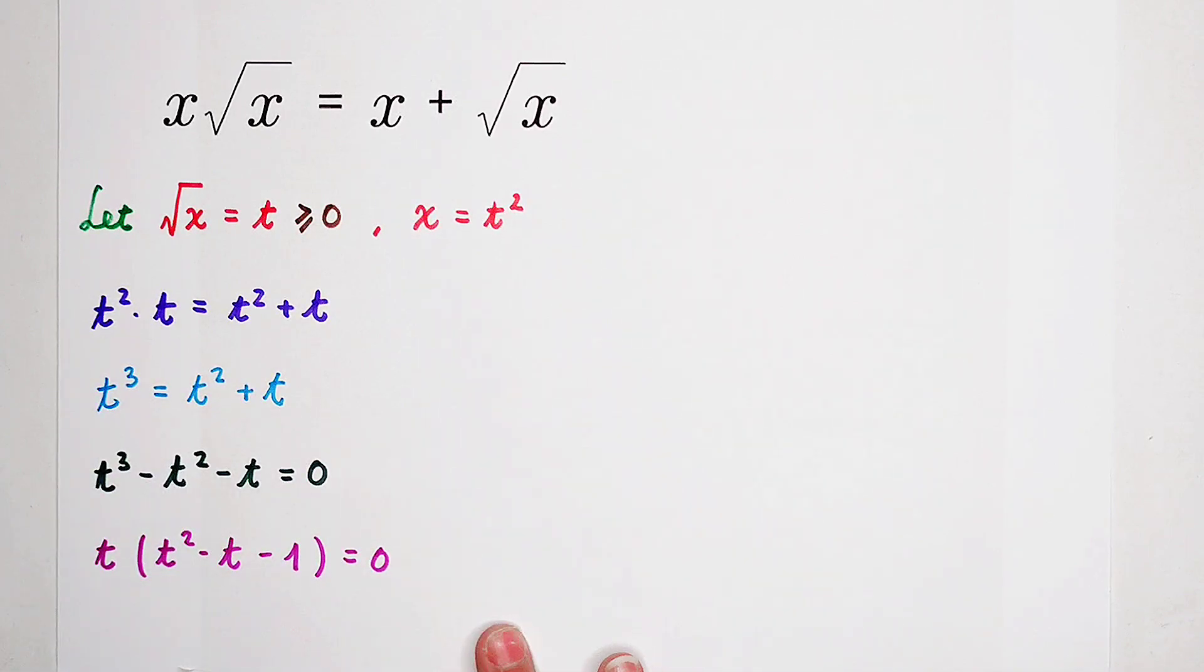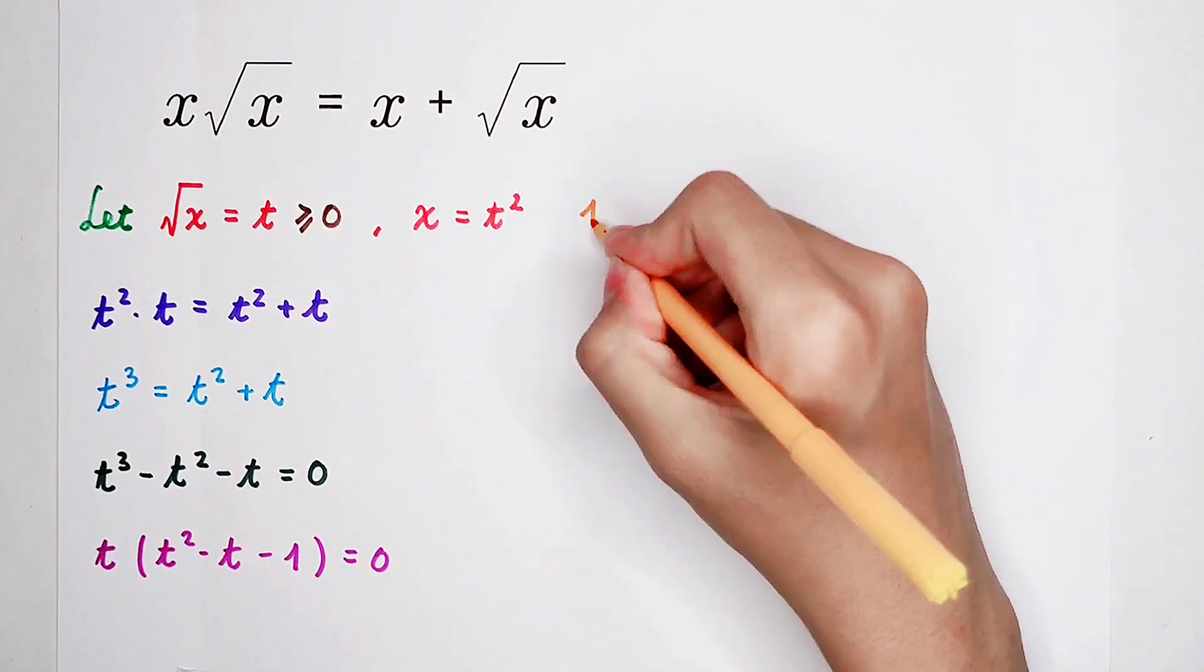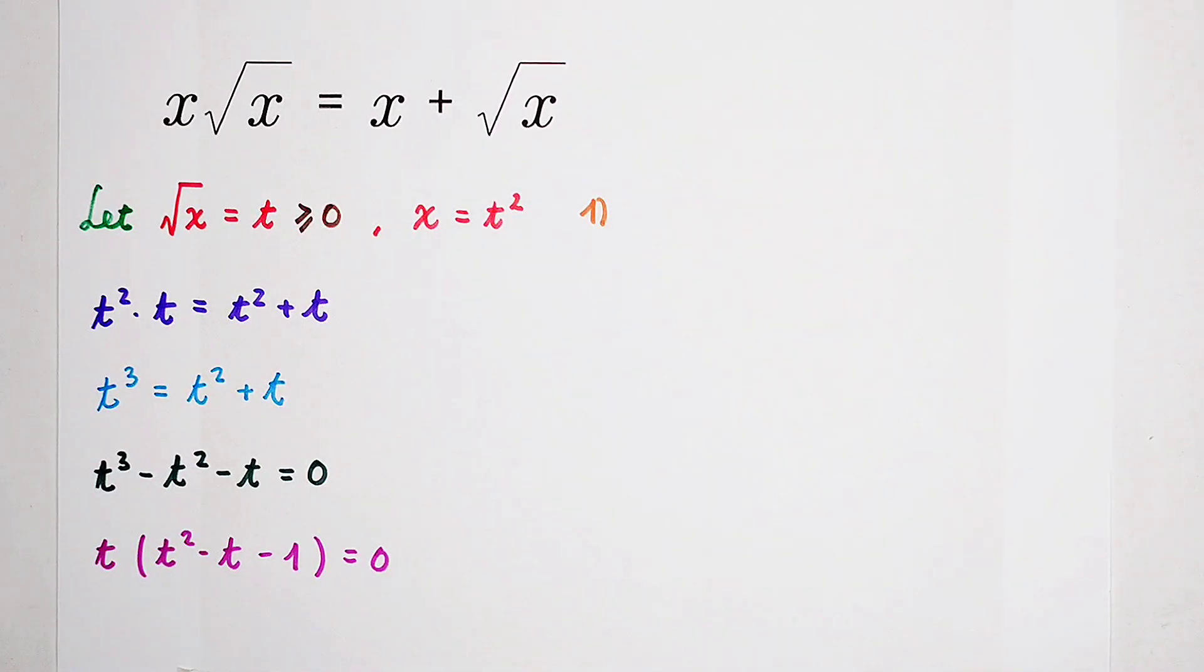So, the left side is a product, and the right side is zero. Successful! So then, of course, we have two cases. The first case, for our first case, t is equal to zero.